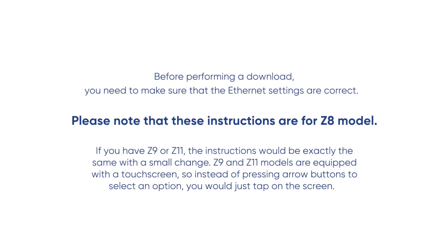Before performing a download, you need to make sure that the Ethernet settings are correct. Please note that these instructions are for the Z8 model. If you have a Z9 or Z11, the instructions would be exactly the same with a small change. Z9 and Z11 models are equipped with a touch screen, so instead of pressing arrow buttons to select an option, you would just tap on the screen.